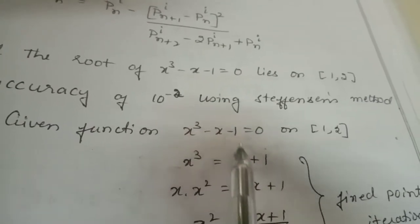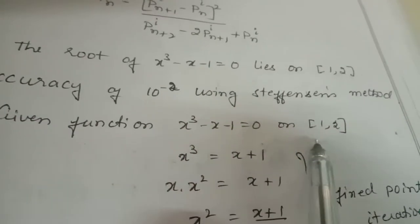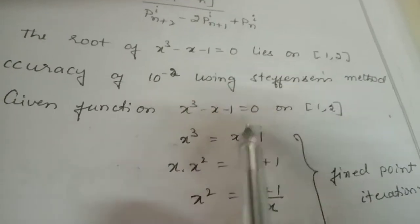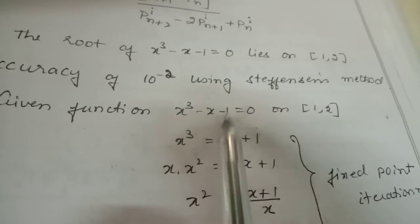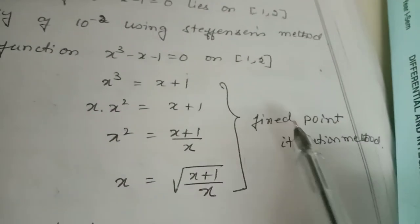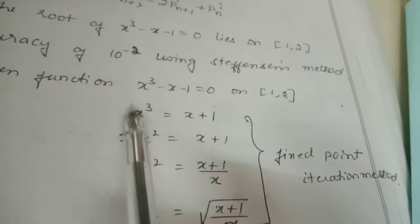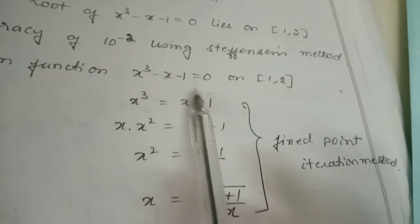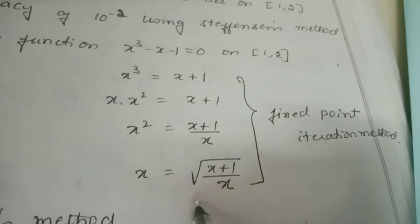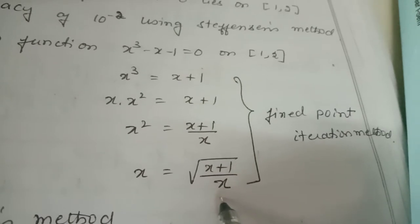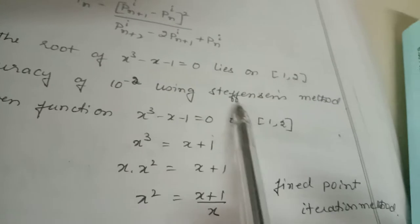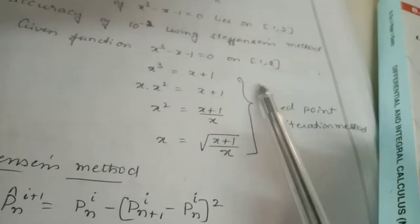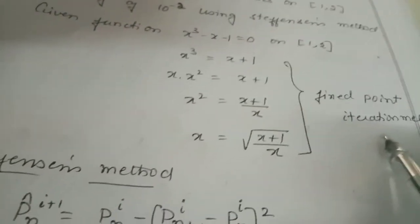The given equation is x³ − x − 1 = 0 on the closed interval [1, 2]. This function x³ − x − 1 can be written in many ways. By using the fixed point iteration method, x³ − x − 1 can be written as x = √((x + 1) / x). We use fixed point iteration only to find this; then again we apply the Steffensen method.